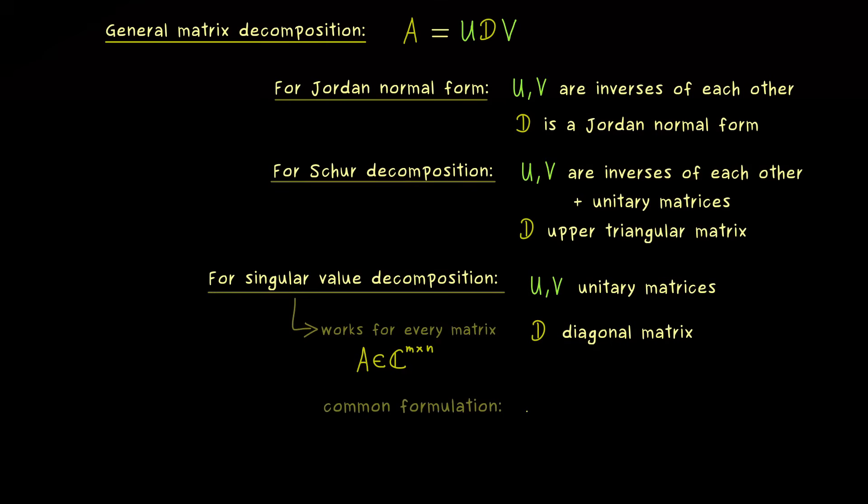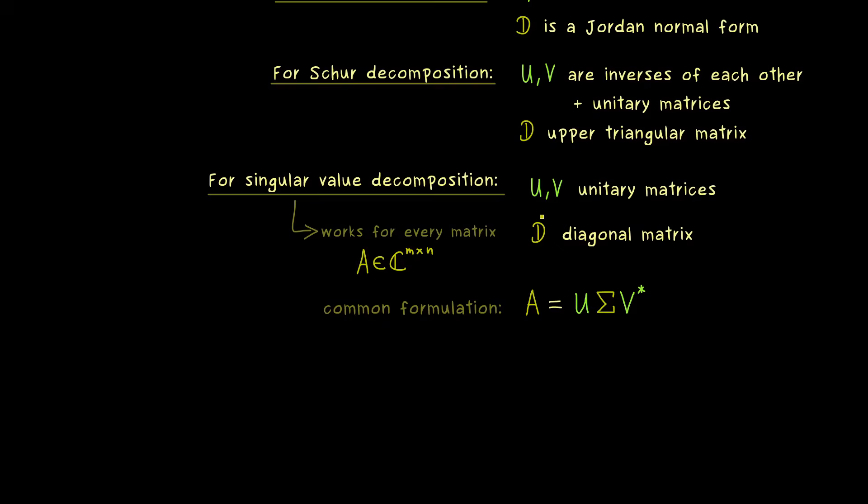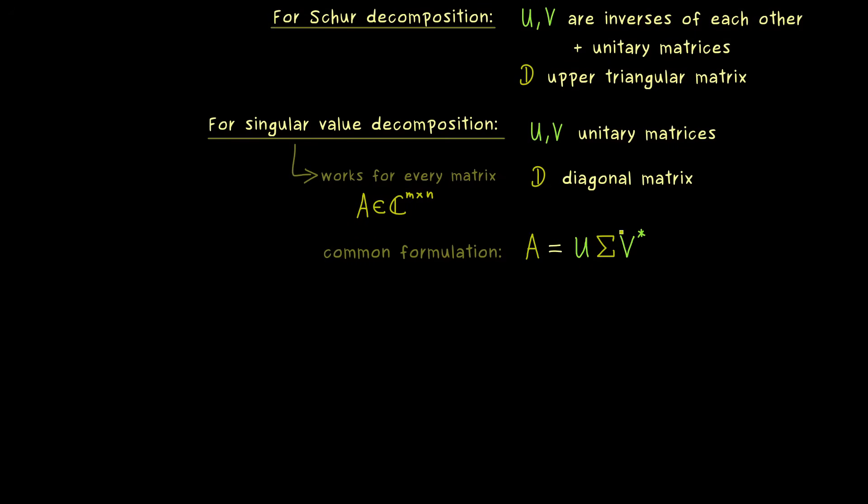Moreover, I can already tell you about the common formulation one has for the singular value decomposition, because we would not write a D, we would use a sigma for the diagonal matrix. And on the right, instead of V, one would write V star, which makes no difference, but it will be easier for the formulas later. So this is what you can already remember. The singular value decomposition uses a transformation with unitaries, which means we conserve lengths and angles, and we go to a diagonal matrix in the end.